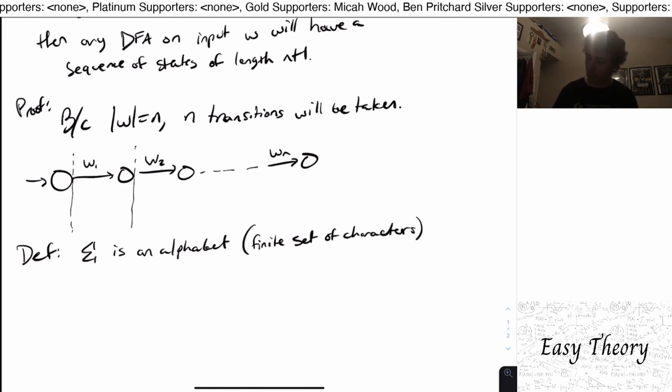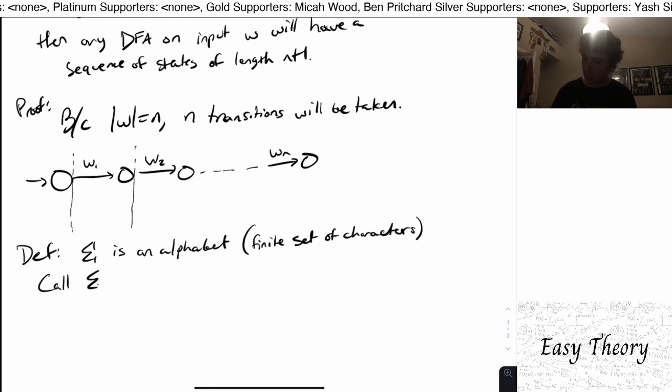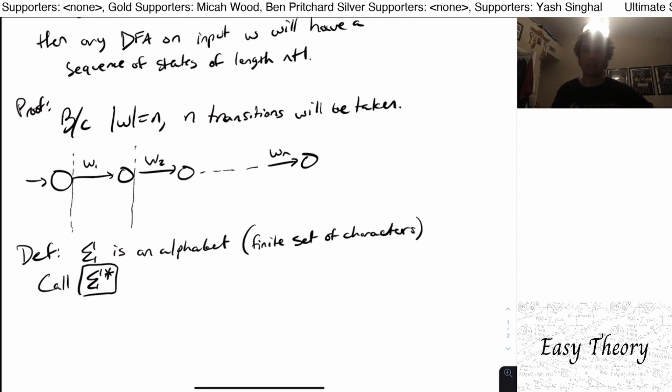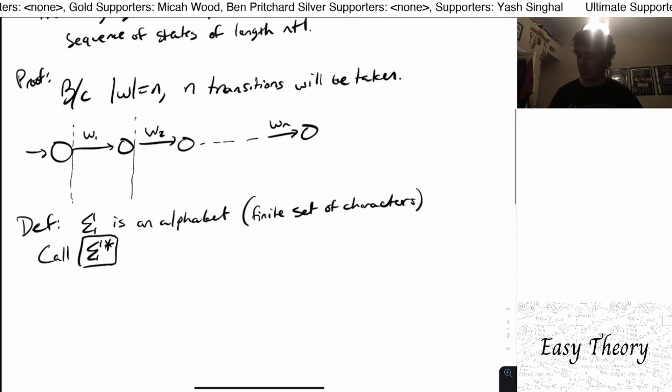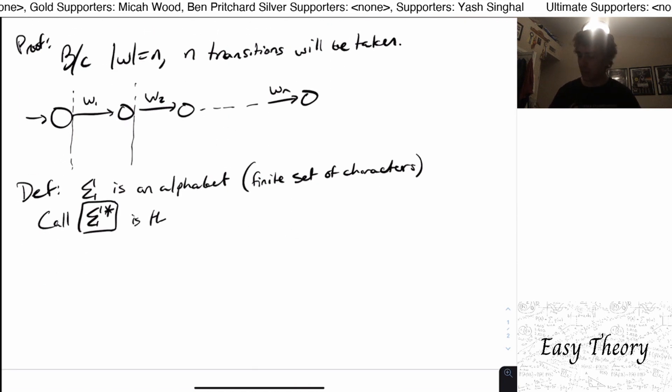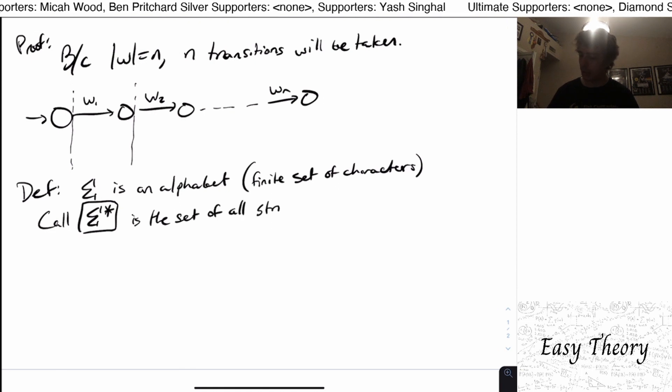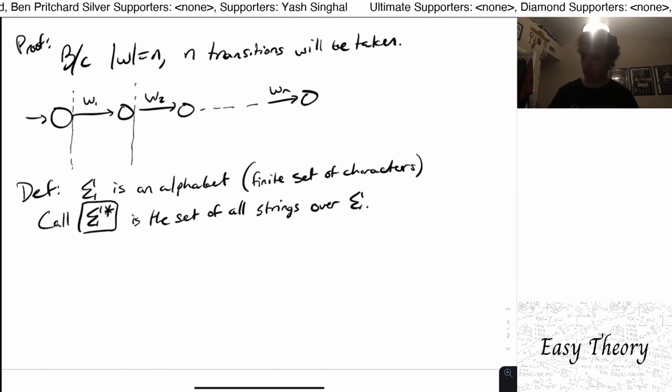That's all it means. Then we're going to call sigma star, I'm going to put a box around it because we're going to reference this all the time. Sigma star is the set of all strings over sigma.